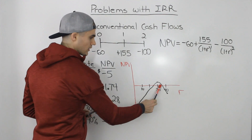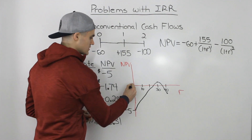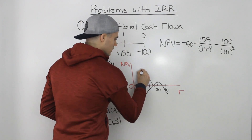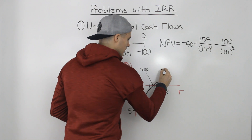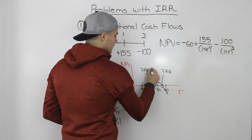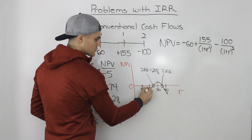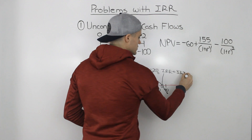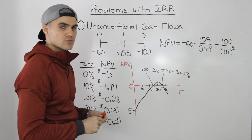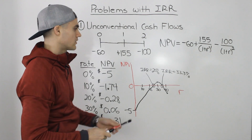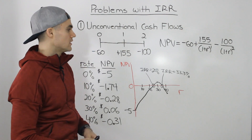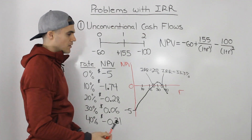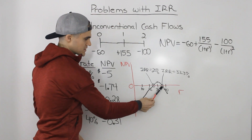Notice how there are two points where the NPV equals zero — meaning there are two IRRs. If you actually compute them, you get 25% for the first one, which falls between 20% and 30%, and 33.3% for the second. The problem is that a financial calculator will usually only give you one of these answers; you have to find the other one with trial and error, or you can use Excel.